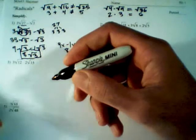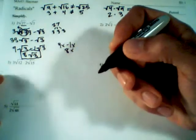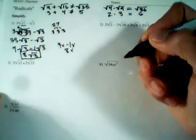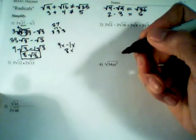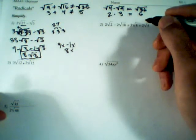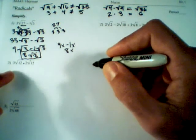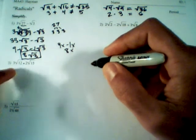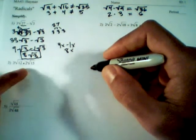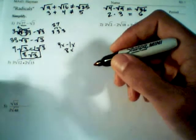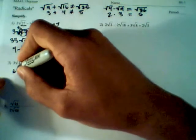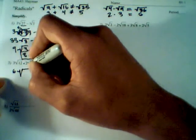Let's move down to number 3. The operation between them is multiplication, so we are able to combine them together. We have to remember which ones are coefficients and which ones are in the radicand. We multiply our coefficients: 3 times 2 is 6. And then we multiply the factors underneath the radical.